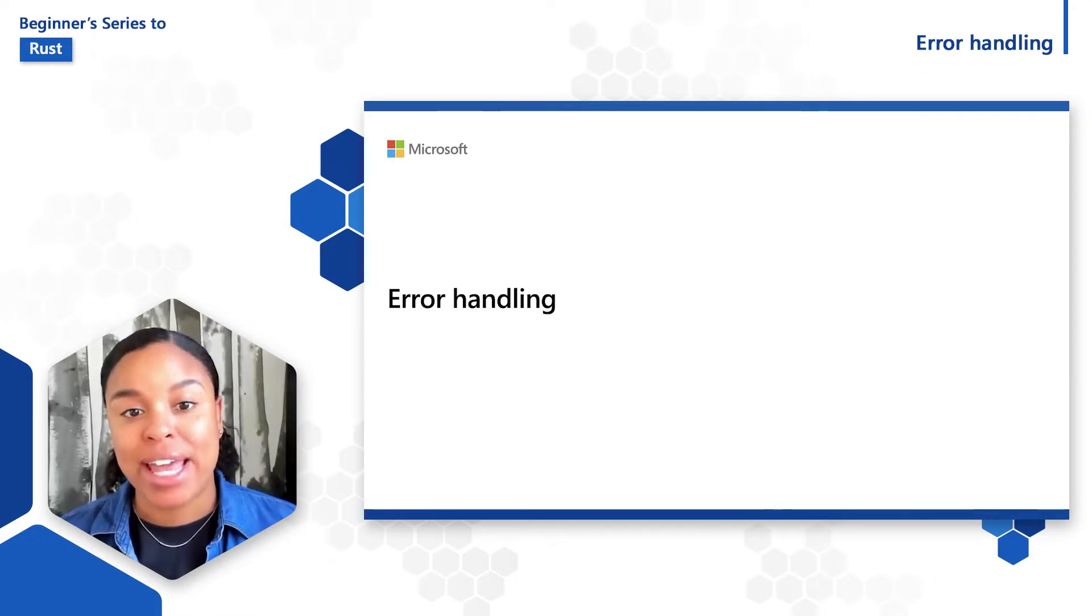Error handling is the process of anticipating and working with the possibility of failure. Learning how to manage errors effectively in Rust before they become a problem will be extremely helpful at saving you time and sanity.